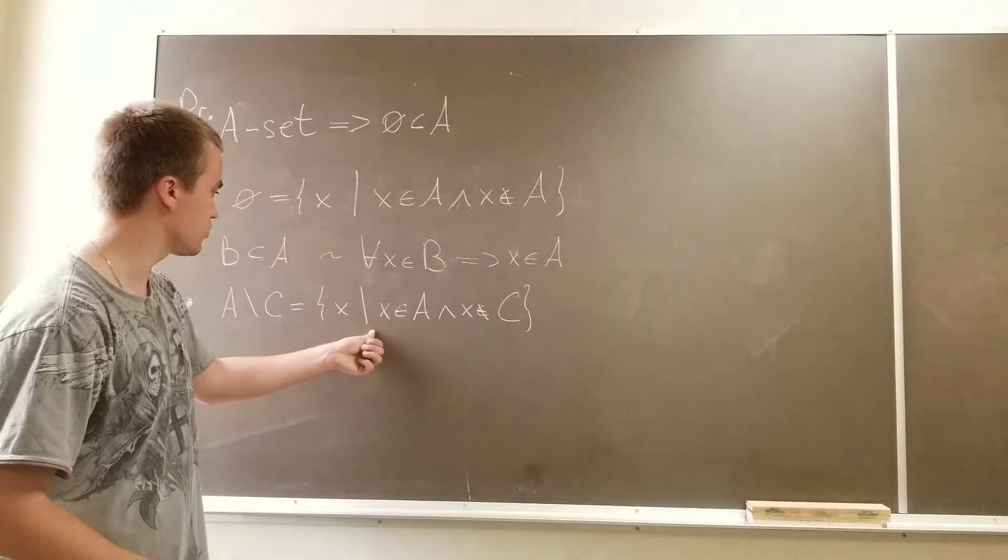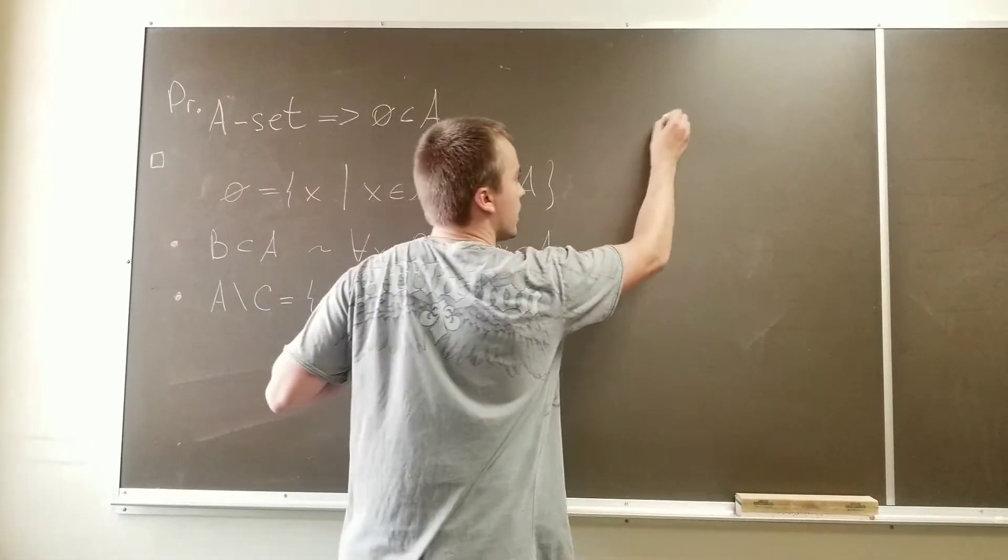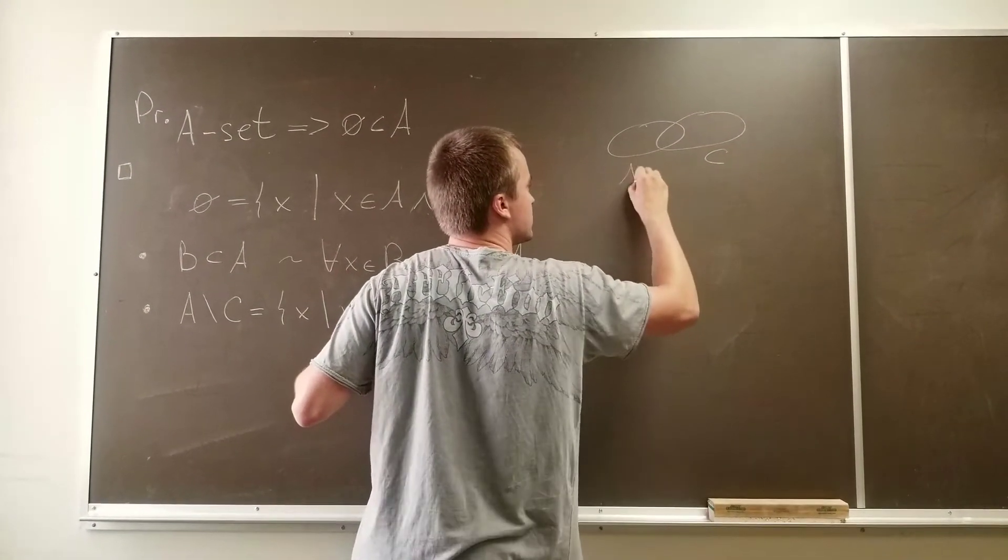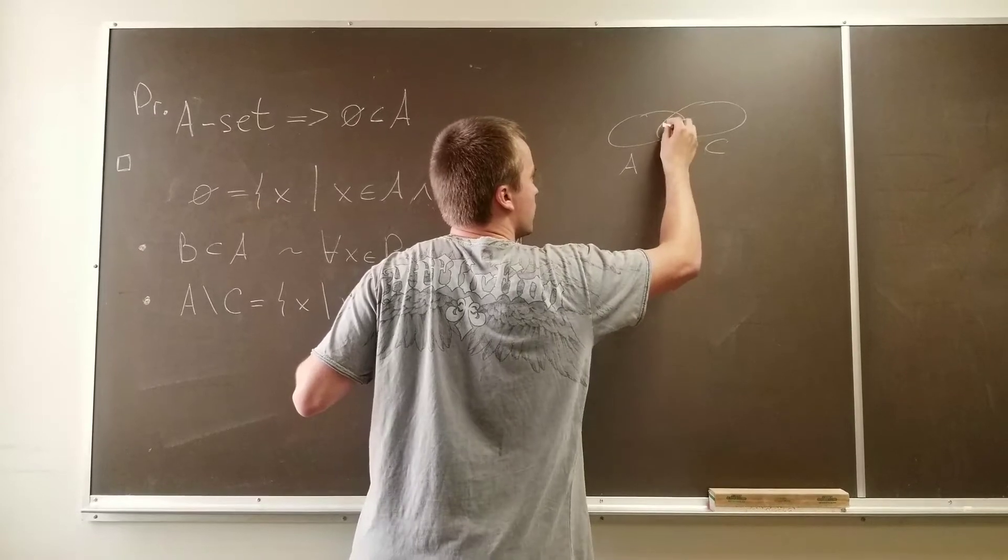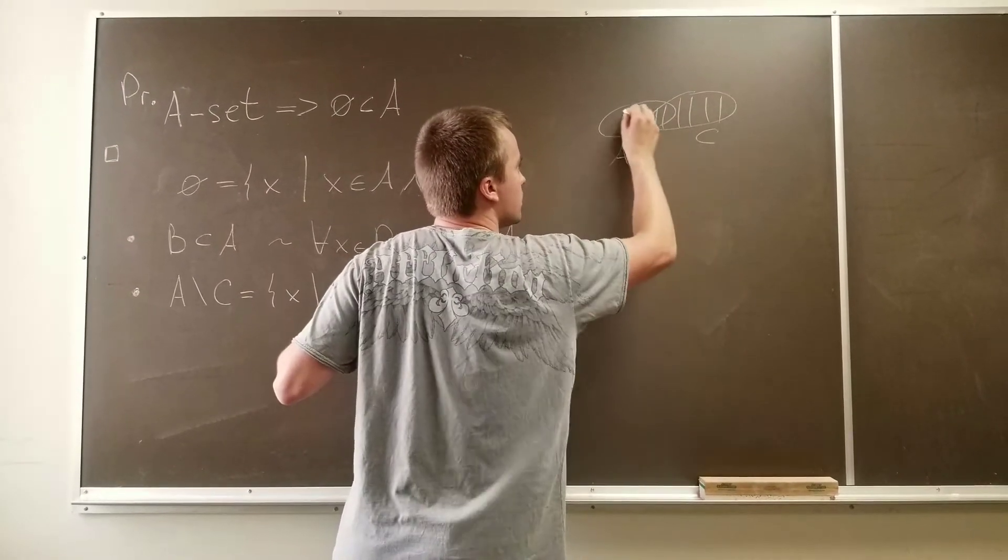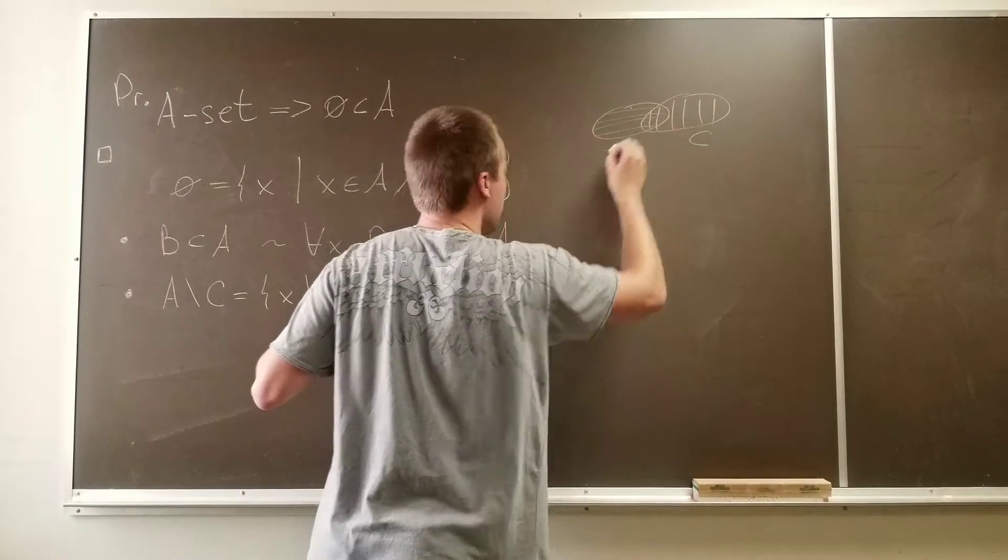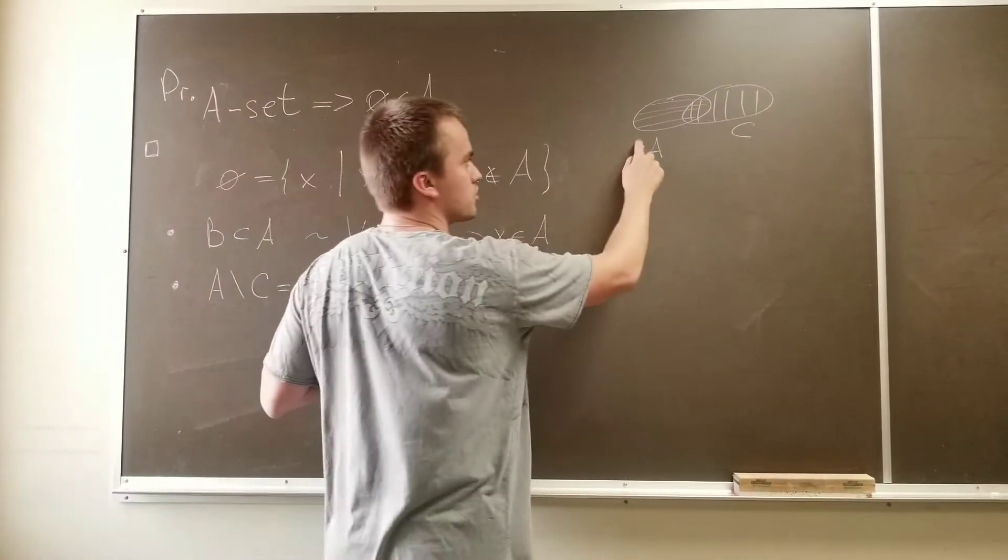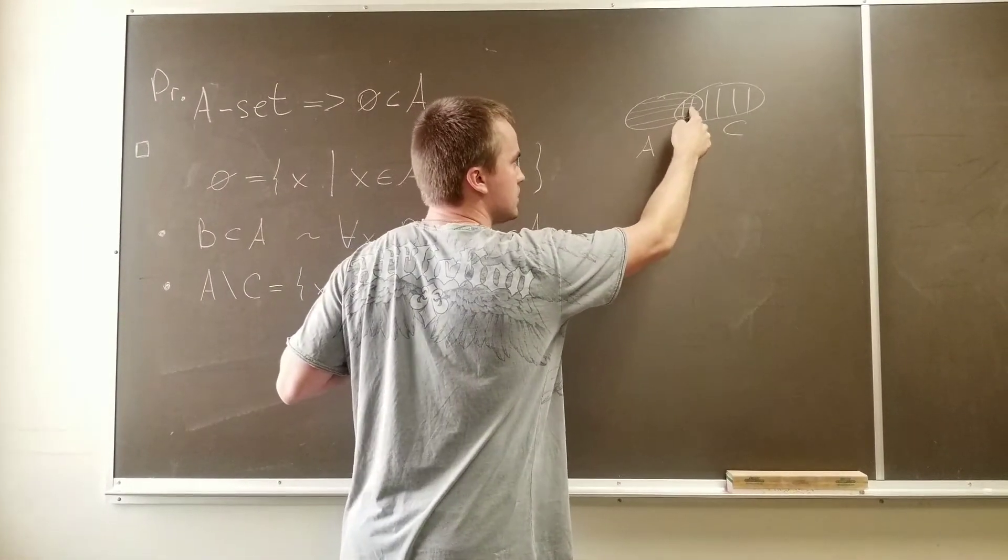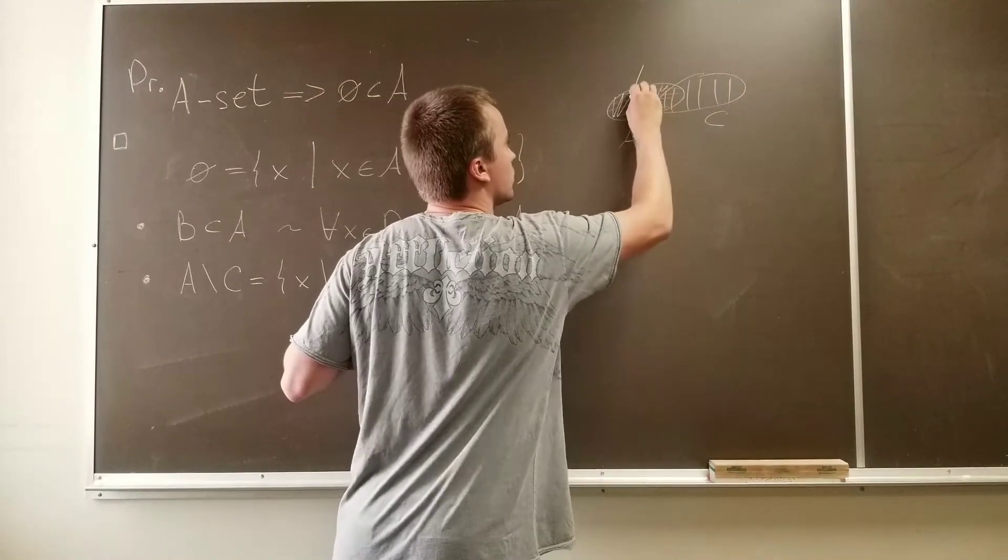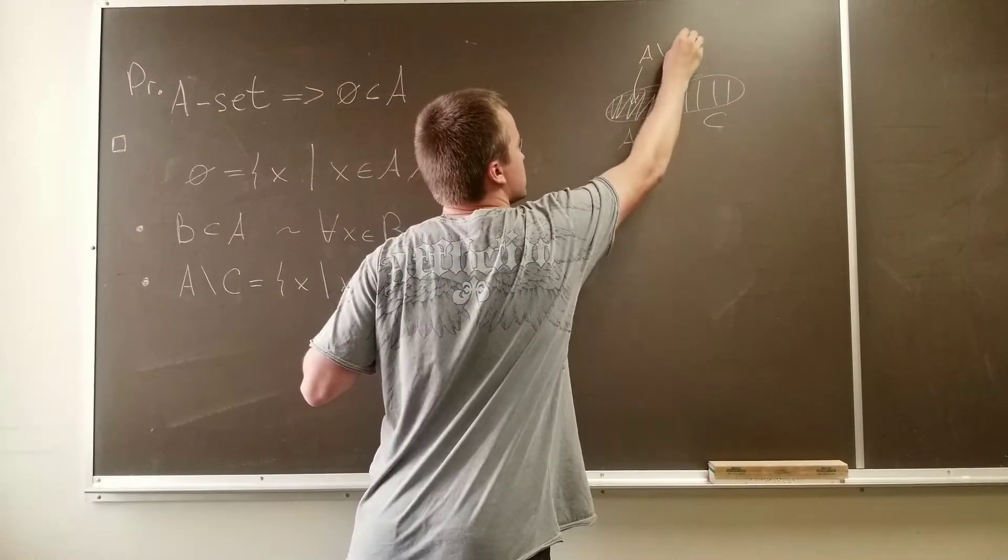So if we're going to draw a Venn diagram, you can see this is C and this is A. A minus C are such elements that x belongs to A and x doesn't belong to C, so this is going to be your A minus C.